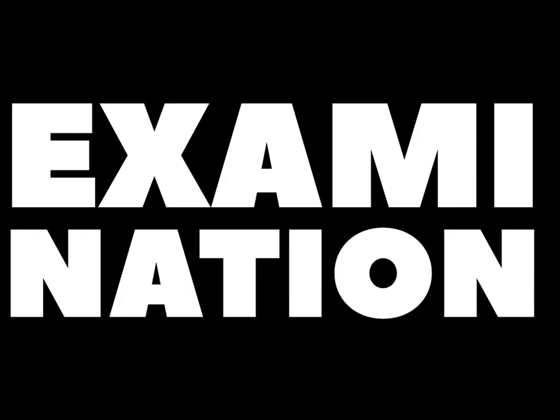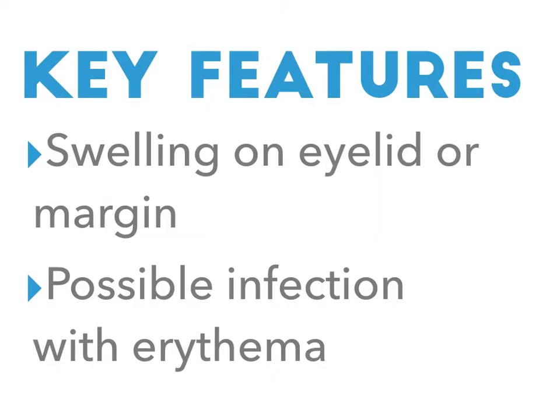What are the key features of examination in chalazion? The key features are a swelling on the eyelid or the eyelid margin, with possible infection with erythema.